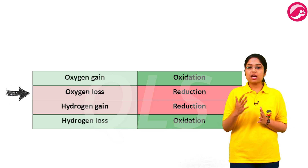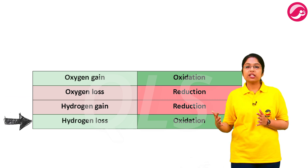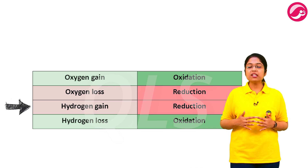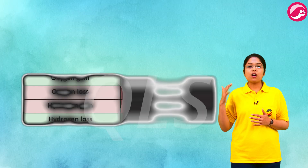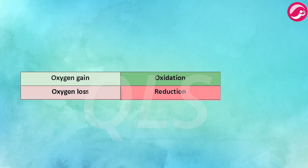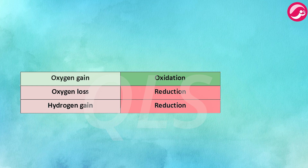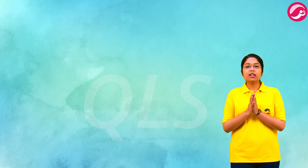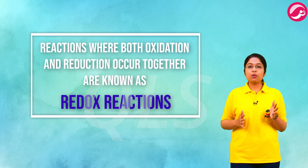When a substance loses oxygen it is said to be reduced. In other terms, when a substance loses hydrogen it is said to be oxidized, and when a substance gains hydrogen it is reduced. To summarize: oxygen gained equals oxidation, oxygen lost equals reduction, hydrogen gained equals reduction, and hydrogen lost equals oxidation.